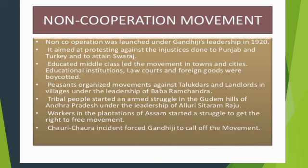Peasants organized a movement against talukdars of Awadh and landlords in villages under the leadership of Baba Ramchandra. Tribal people started an armed struggle in the Gudem hills of Andhra Pradesh under the leadership of Alluri Sitaram Raju, who was inspired by Mahatma Gandhi but did not believe in non-violence. Workers in the plantations of Assam started a struggle to get the right to free movement.